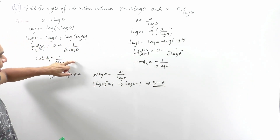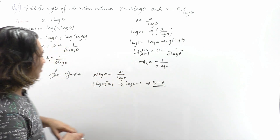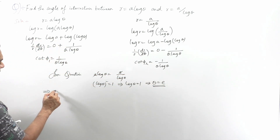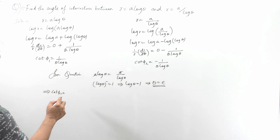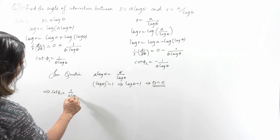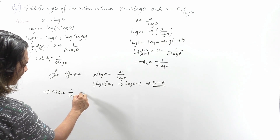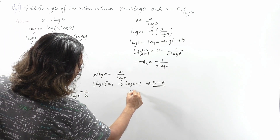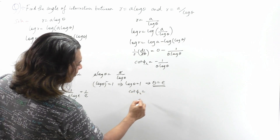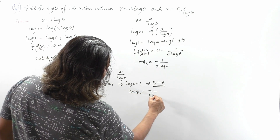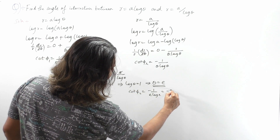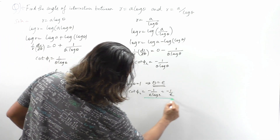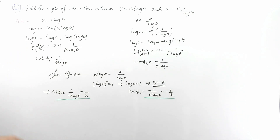Now put θ = e into cot φ₁ and cot φ₂. We get cot φ₁ = 1/(e·log e) = 1/e, and cot φ₂ = −1/(e·log e) = −1/e. So cot φ₁ = 1/e and cot φ₂ = −1/e.